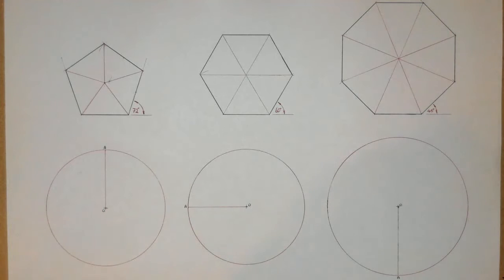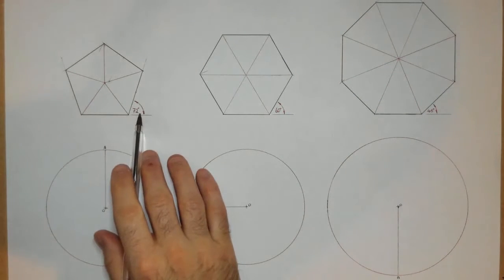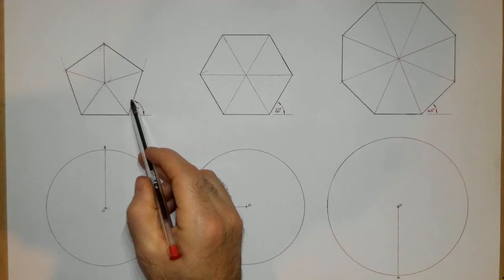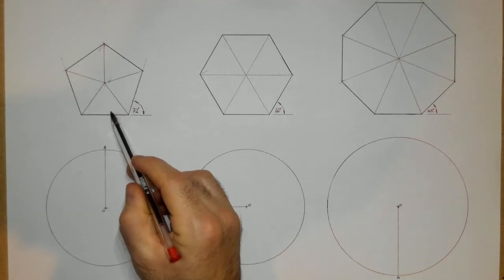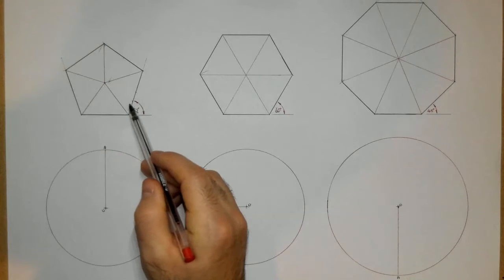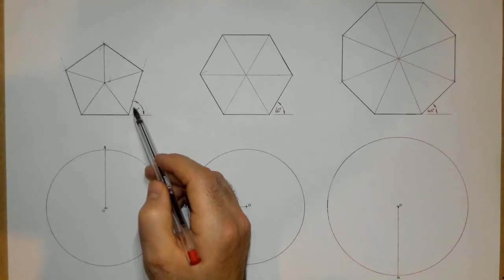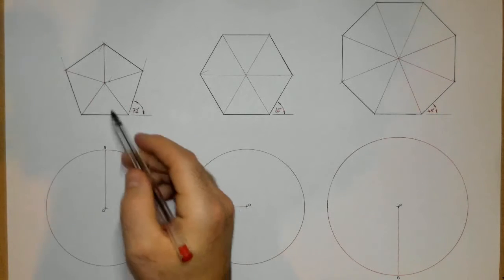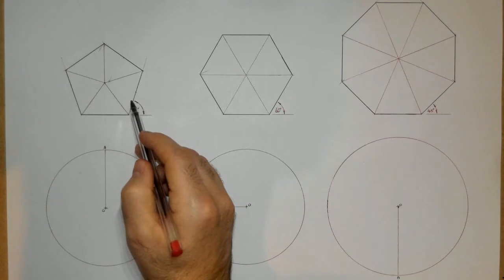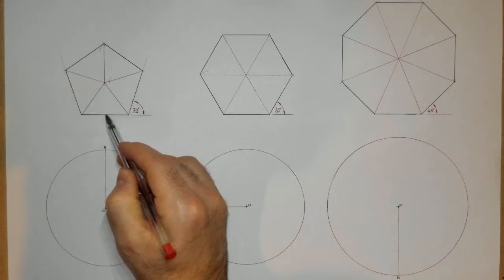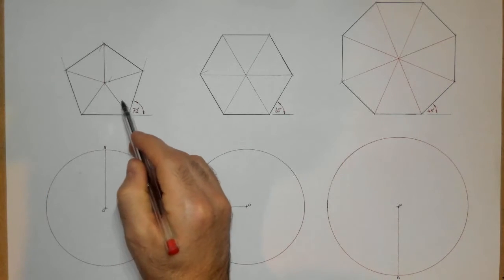Just using a little bit of simple maths - if we have the exterior angle of 72 for the pentagon, we know that the interior angle is going to be 108. I got that from a straight line, which is 180. 180 minus 72 leaves us 108. So that angle there, from this line to this line, is 108.